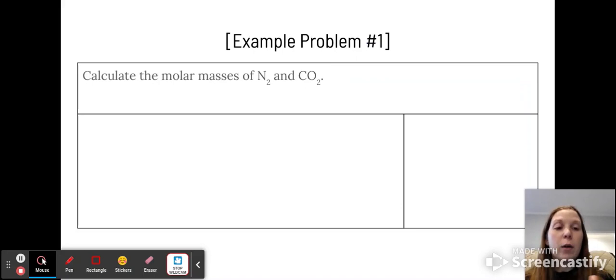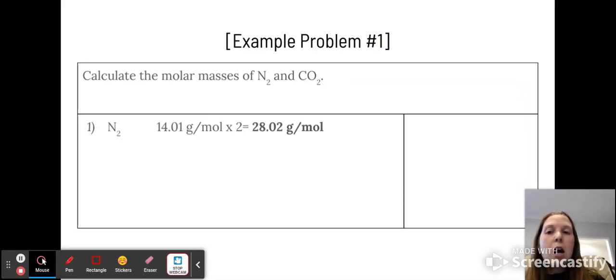So let's talk very quickly about how to calculate this. So we've got two compounds here or elements. We've got N2 and CO2. Our first step is to find the molar mass of one nitrogen, which is 14.01. Since we have two of them, we multiply it by two and we get 28.02.